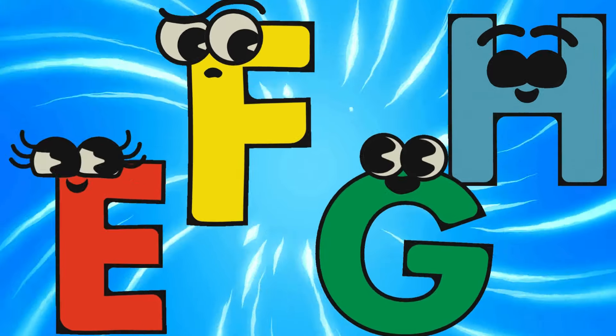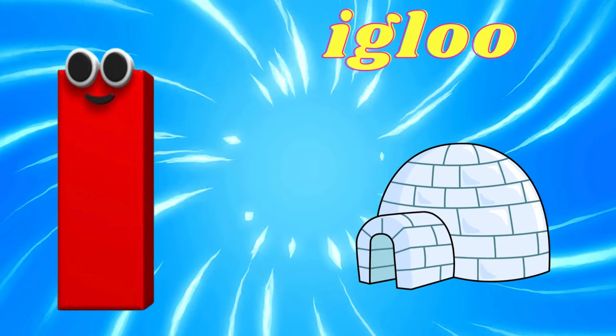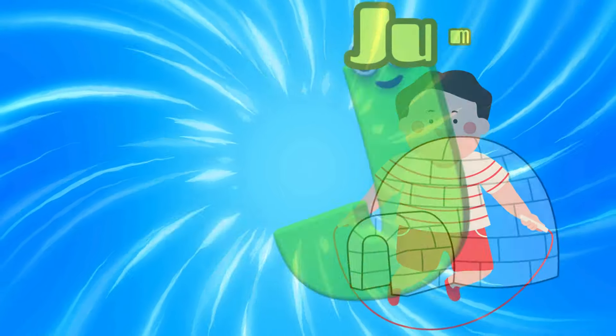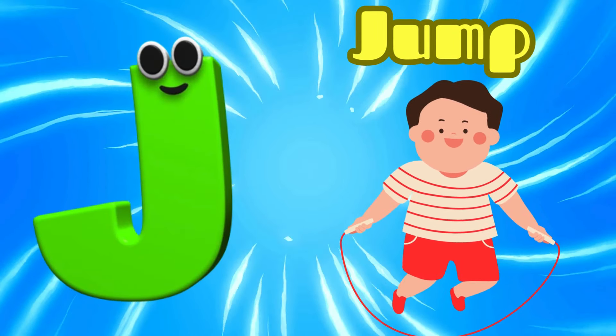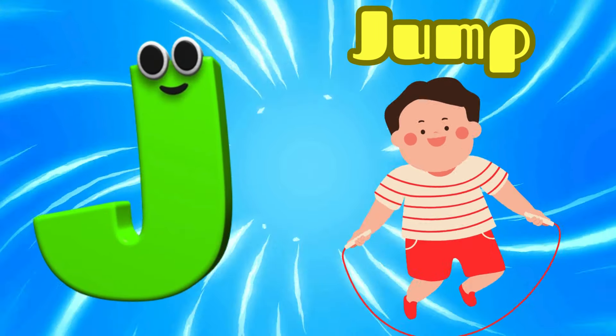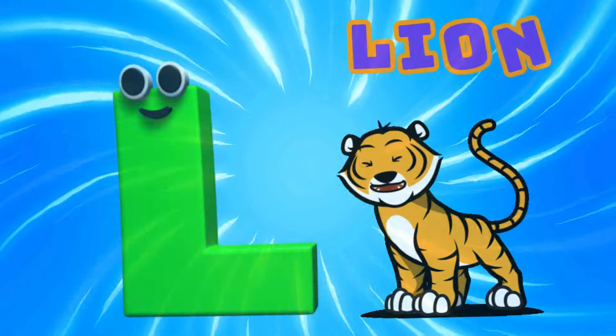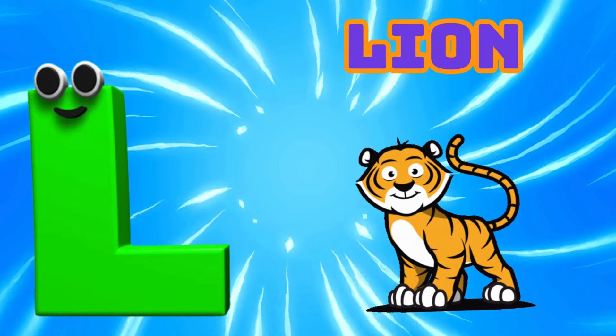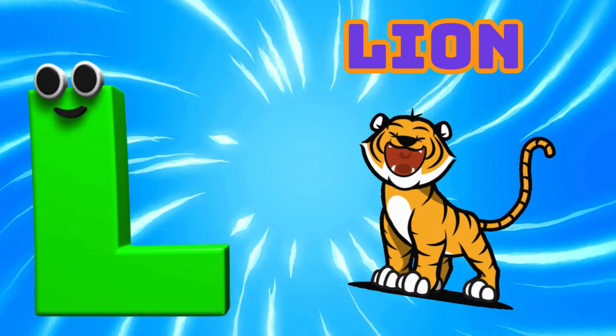I is for Igloo, I-I-Igloo. J is for Jump, J-J-Jump. K is for Kangaroo, K-K-Kangaroo. L is for Lion, L-L-Lion.